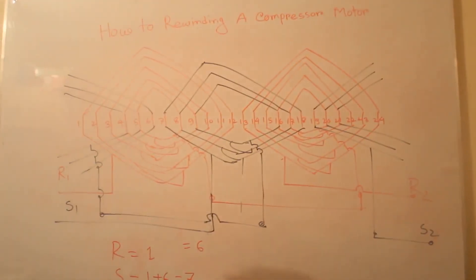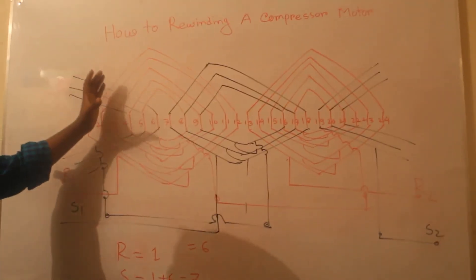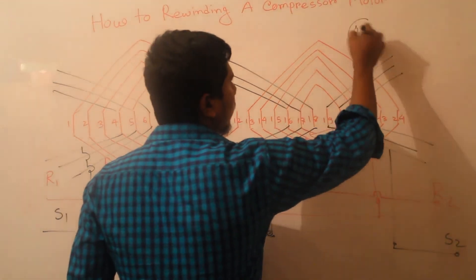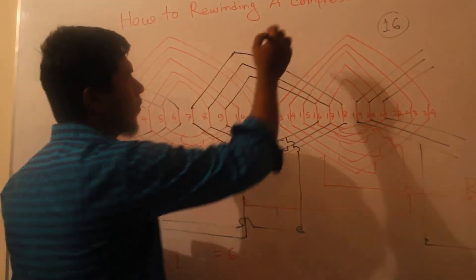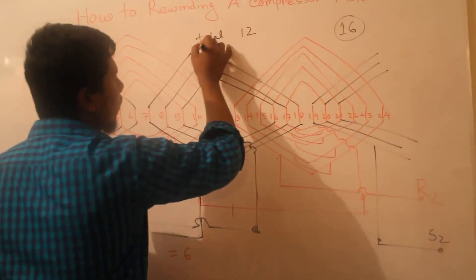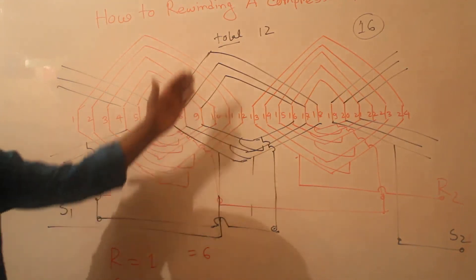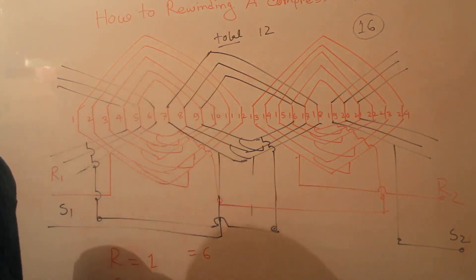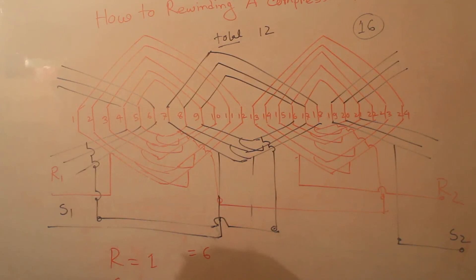The total coils are 10 running and 6 starting, so 16 coils total. We first calculated the total as 12 coils, but here we use 16 coils — we increased by one full coil to set up the running coil higher. This is the most useful rewinding configuration for a refrigerator compressor motor.